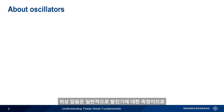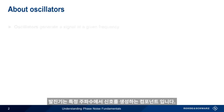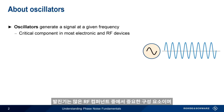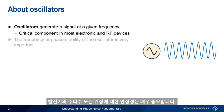Phase noise is a common oscillator measurement, so we'll start with a short overview of oscillators. An oscillator is a device that generates a signal at a given frequency. Oscillators are a critical component in many electronic devices, and it's not uncommon for a single RF device to have multiple oscillators. For reasons we'll discuss shortly, the frequency or phase stability of the oscillator is very important.